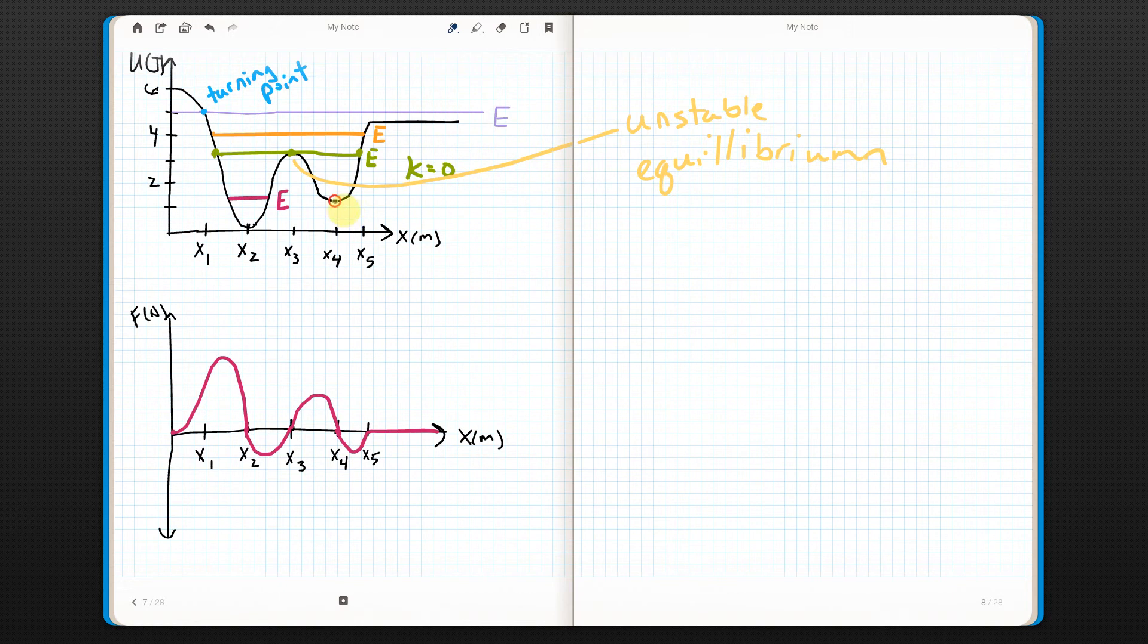What about this funny slate color? Well, if we put a particle at x4 and it had this energy, the pink one.